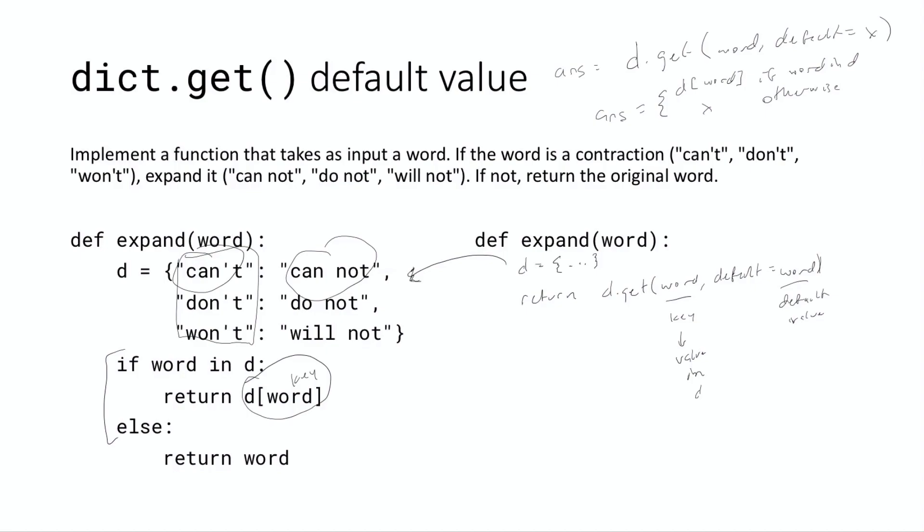And the last thing you need to do to get this to be a one liner is to just inline the d variable. And this is what we did in the last one. And the inlining idea is a good one. We're only using this dictionary in one place. And so what we can actually do is we can return whatever the dictionary is dot get. And of course, the dictionary is going to have can't, don't, won't in it.